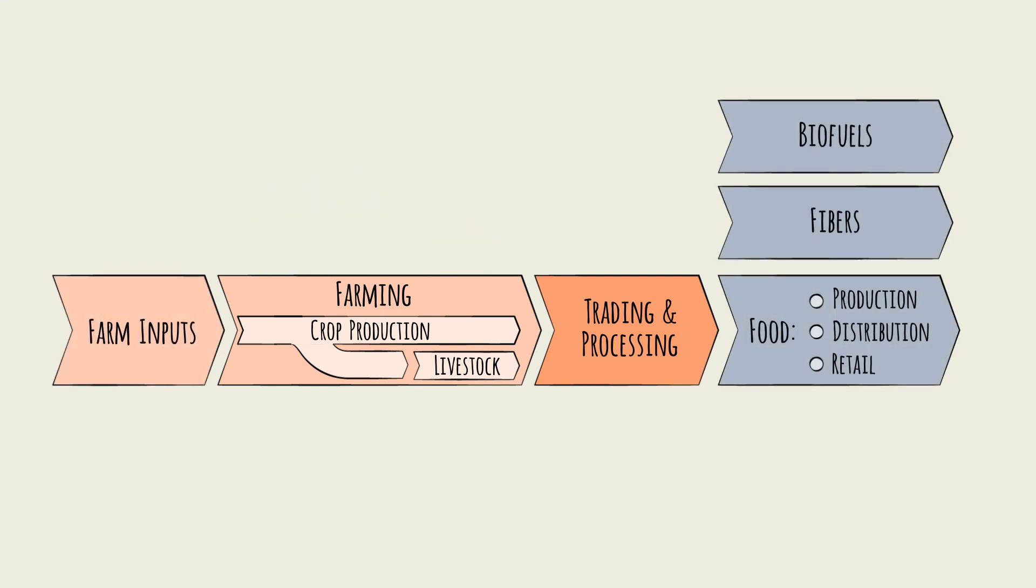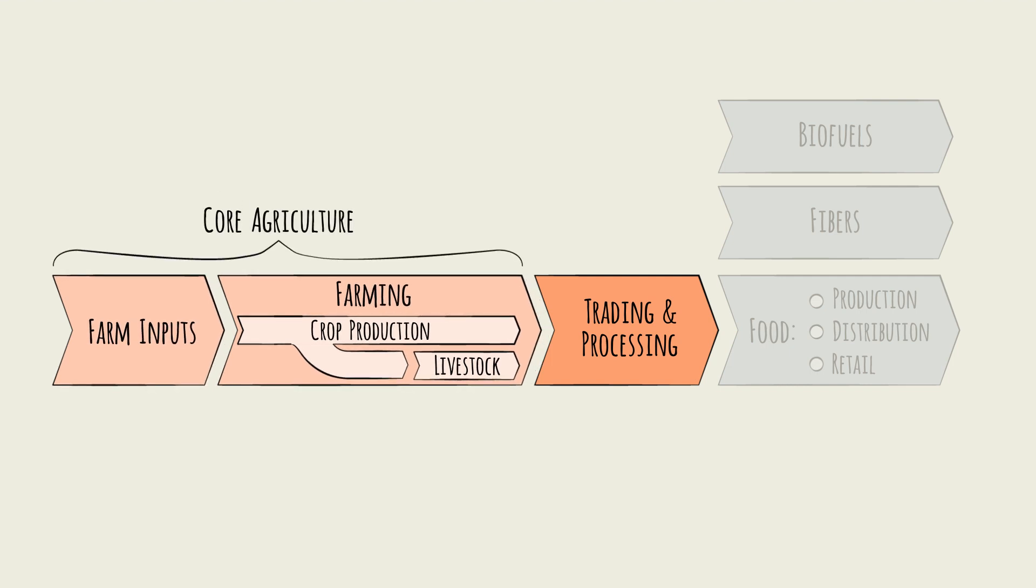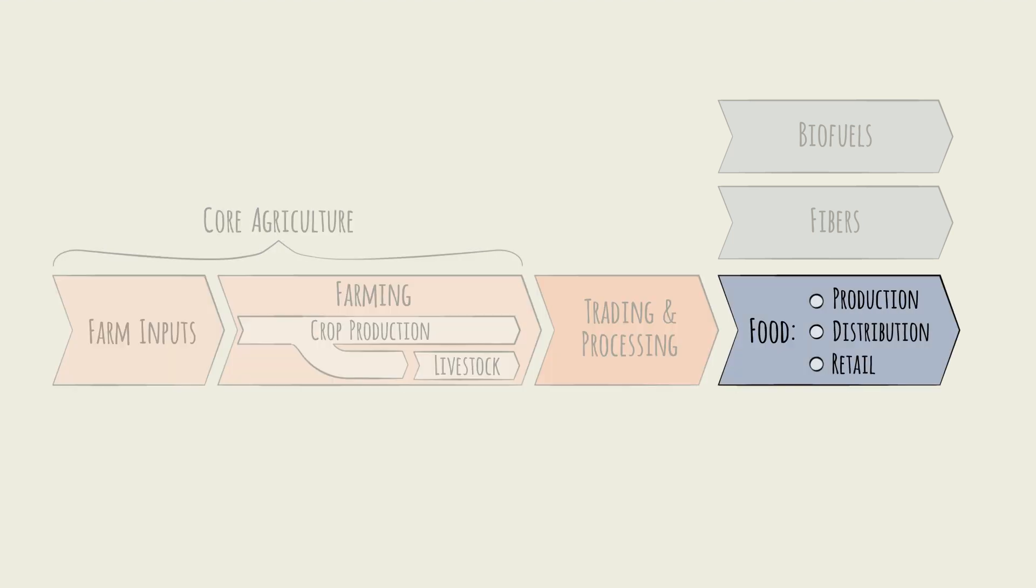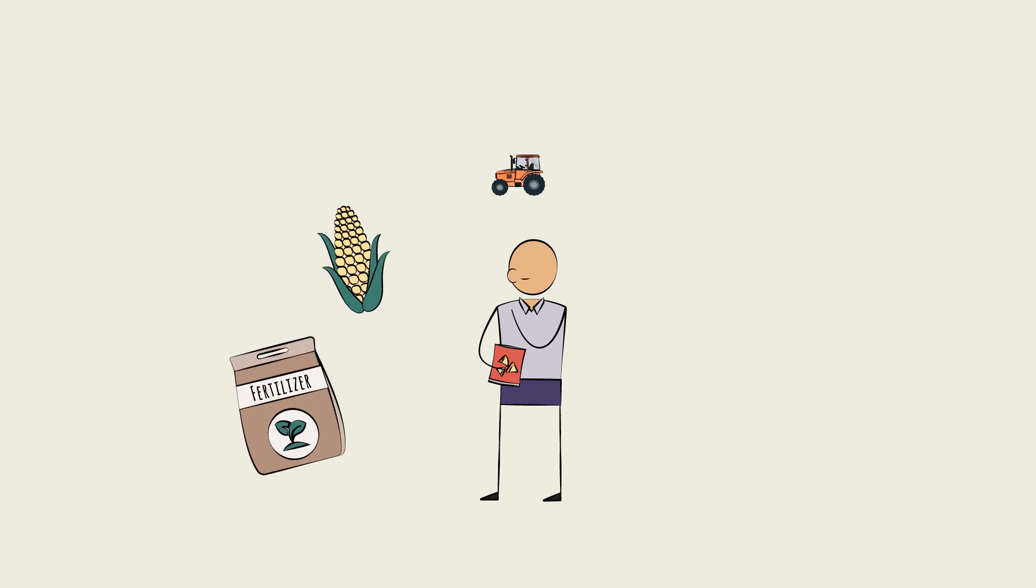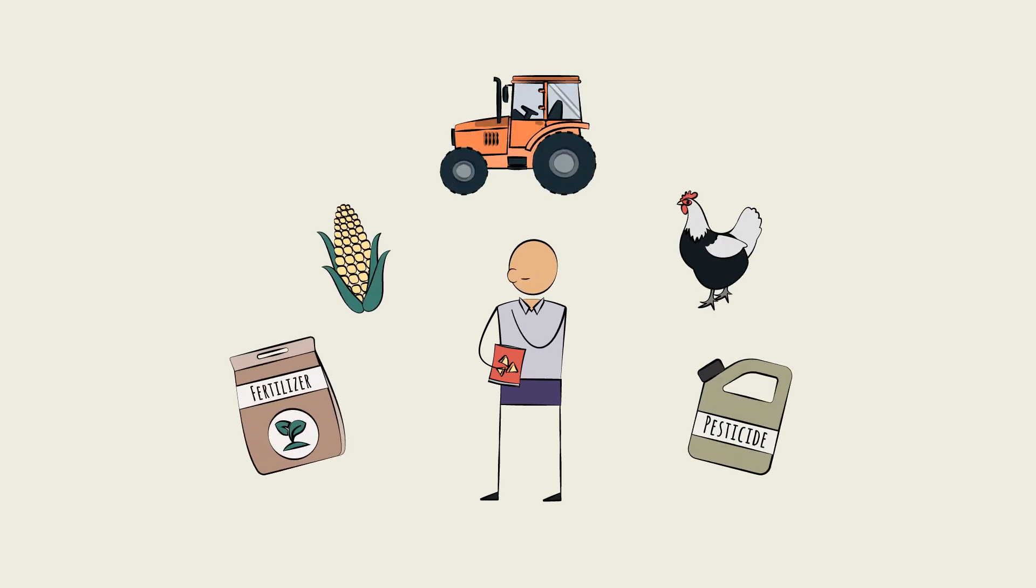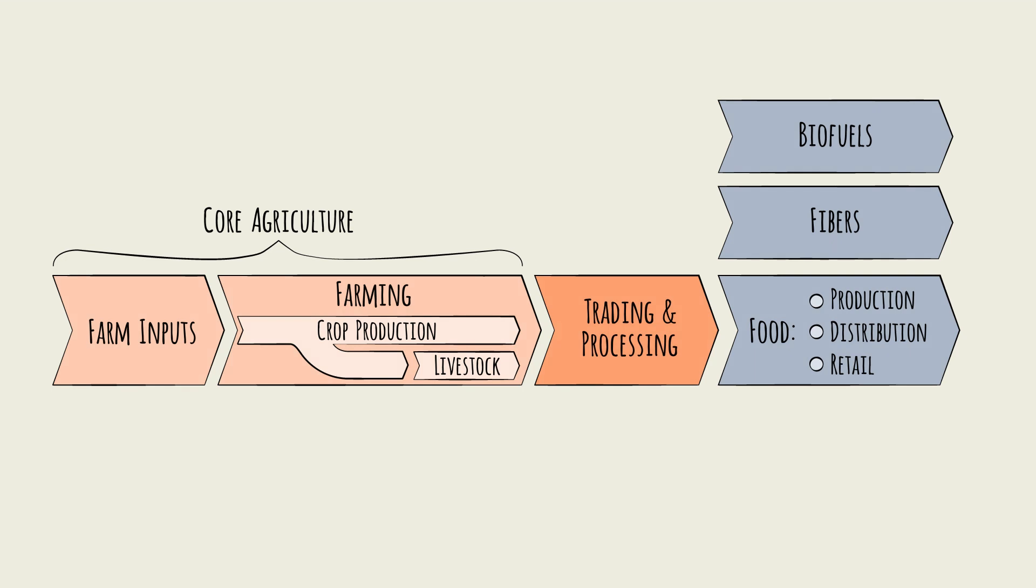While many consider this entire value chain to fall within the realm of agribusiness, in this primer, we will focus on the first three steps. Inputs and farming, which are the core agriculture steps, as well as trading and processing. Food production, distribution, and retail are largely beyond our scope here. This primer will uncover the unique dynamics, players, and considerations at each stage, as well as the major trends impacting agriculture across the board. First up, farm inputs.